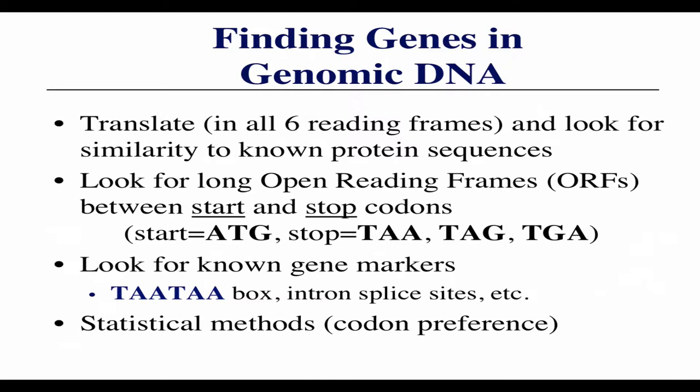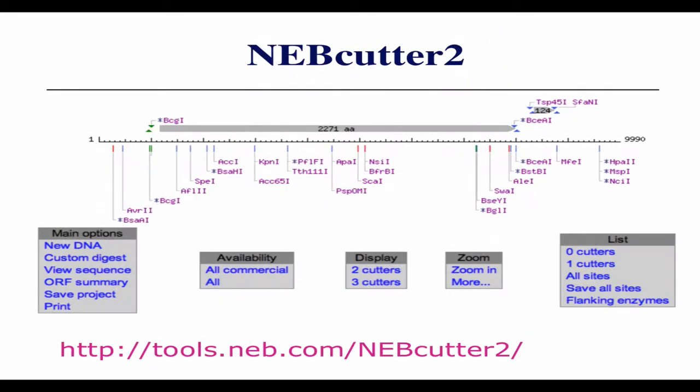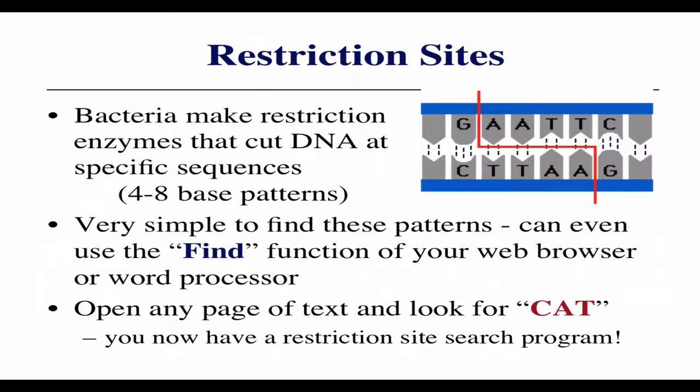A lot of restriction sites are actually either direct repeats or inverted repeats, and that's true for a lot of protein-DNA interactions. The enzyme itself is a protein, and many DNA-interacting proteins act as dimers. If it's a head-to-tail dimer, you probably have a tandem repeat of the site. If it's a head-to-head dimer, you probably have an inverted repeat of the sequence.